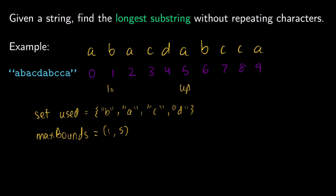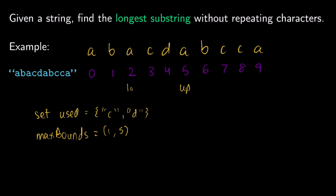The next character we check at index up is A. We can see that A is already in our set used. So we remove the element at the lower bound, which is B — we're not including that in our window anymore — and we move low up to index 2. Our max_bounds does not change because we shortened the window. We check the character at index up again — it's still A, and we've already used A. So again, we remove character A from our set and shift low up to index 3. Our new range is 3 to 5, which is not the max_bounds. Now we can add the character at index up — it's A, and we don't have A in our used set — so we add that and shift up. The new difference is 3, but the max_bounds difference is 4, so we don't update anything.